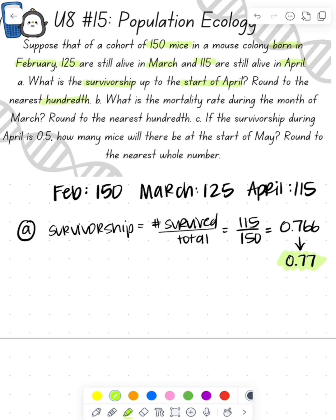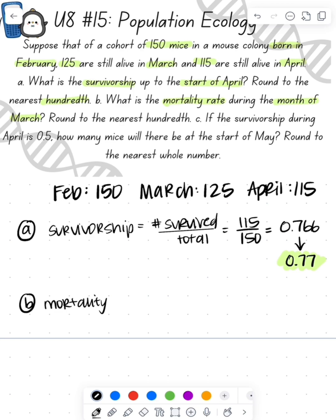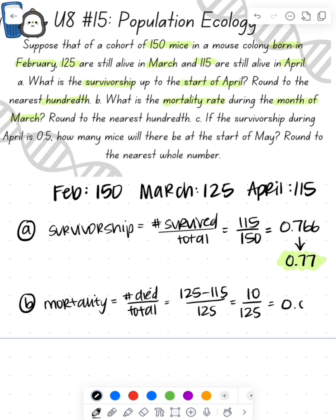For part B, we need to figure out the mortality rate during the month of March. We take how many were alive at the beginning of March and subtract the amount still alive at the beginning of April, which tells us how many died during March. That gives us 10 over 125, so the mortality rate is 0.08.